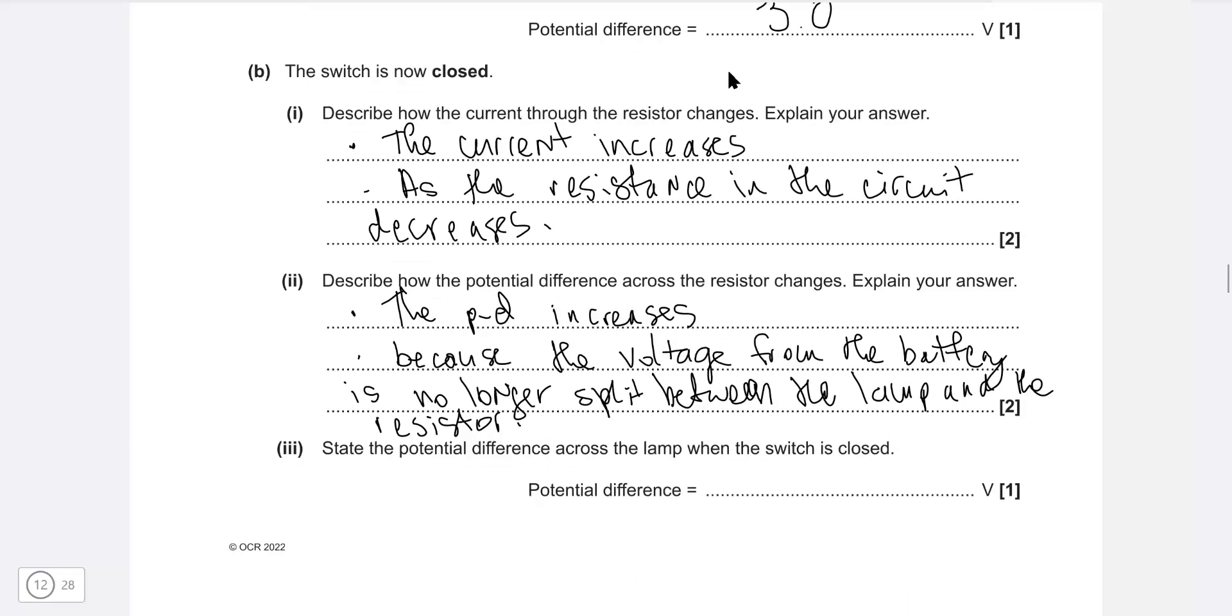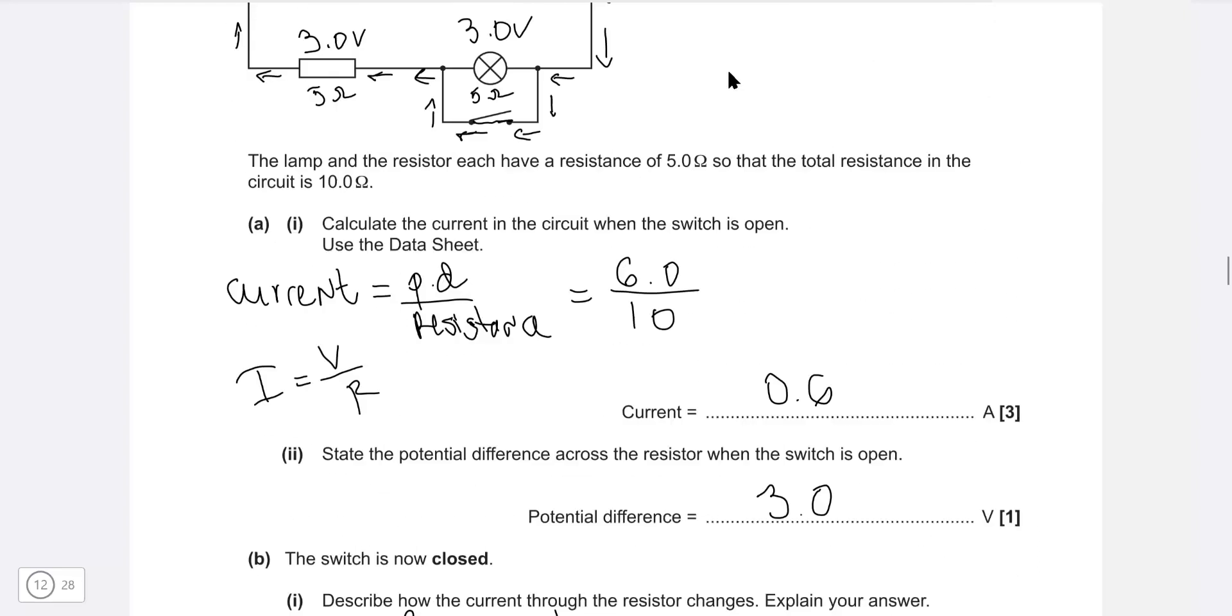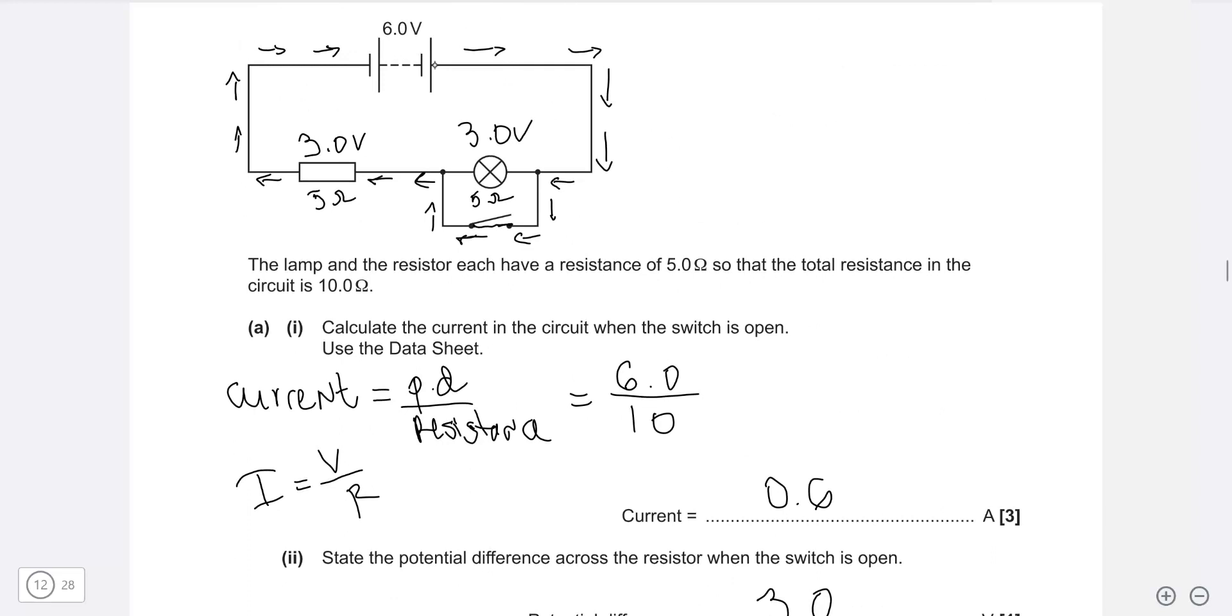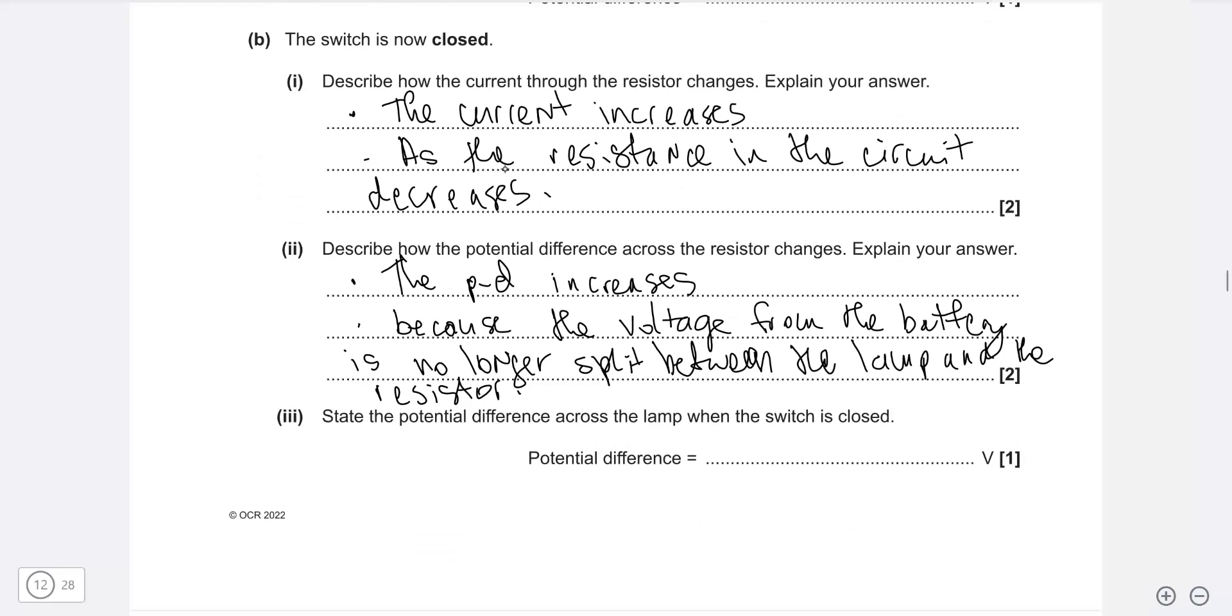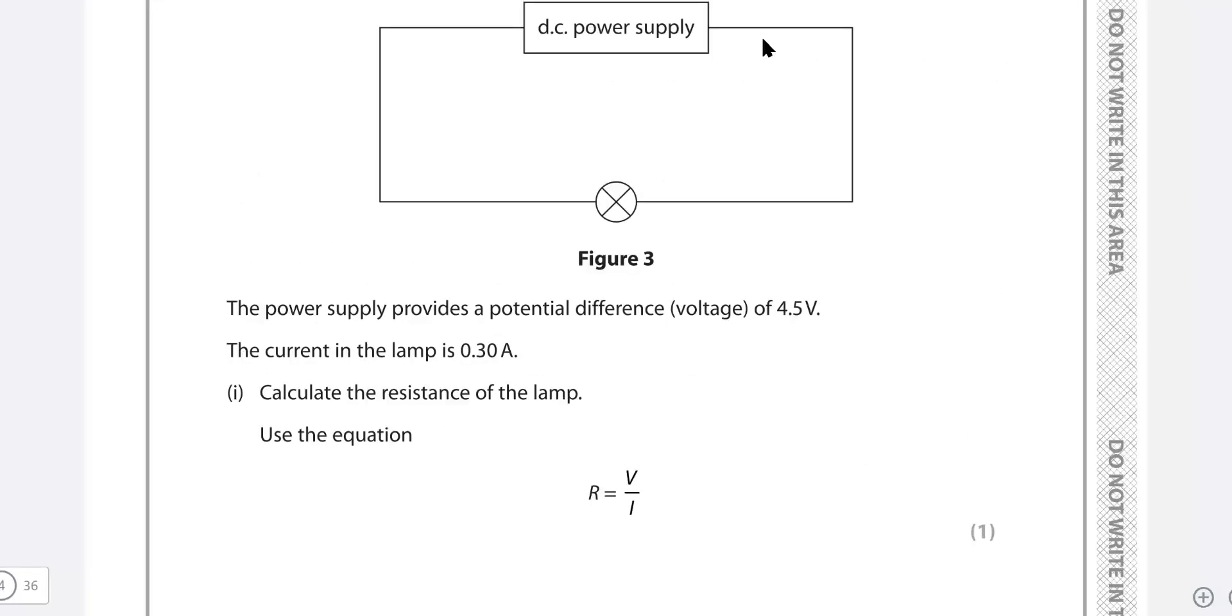Next part: state the potential difference across the lamp when the switch is closed. As I said, when the switch is closed, the current is going to go through here, meaning that it will not go through the filament lamp, meaning that the potential difference across the lamp will be just 0 volts.